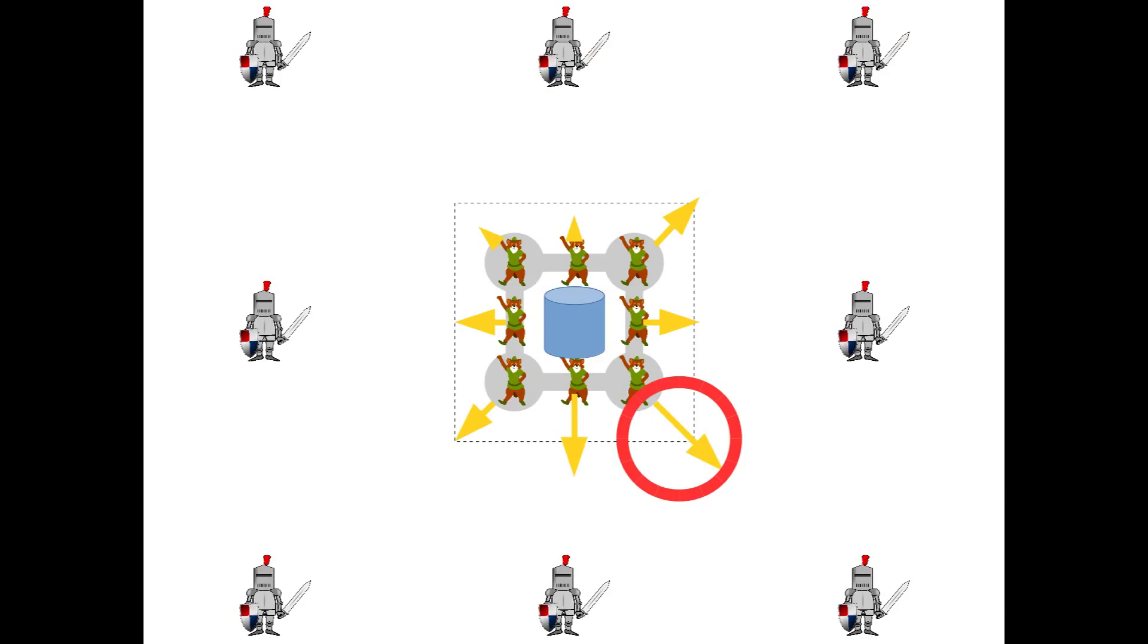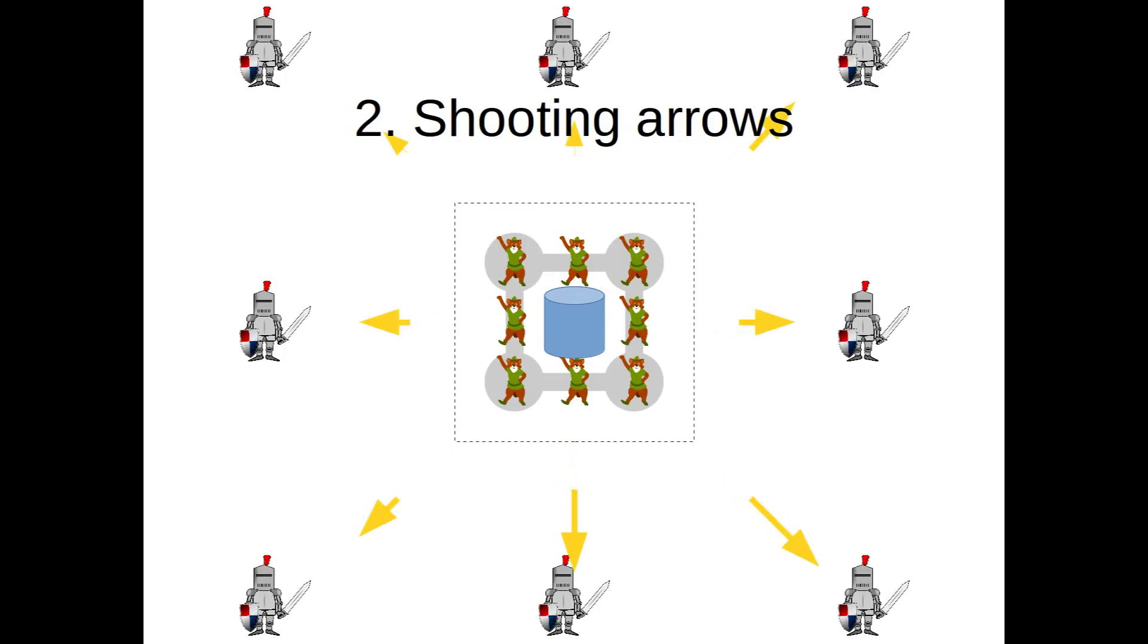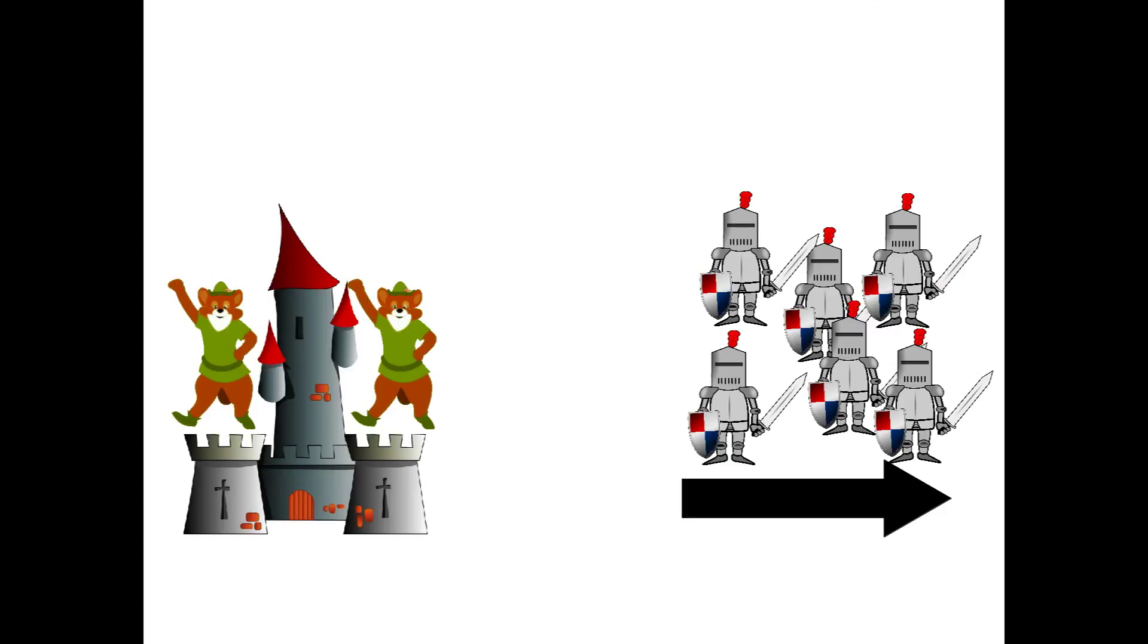Some foxes obtained more arrows, and some less. By this clever move, that is, redistribution of arrows and shooting the arrows towards the attackers, the attackers got scared and ran off.